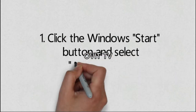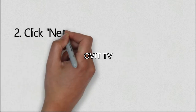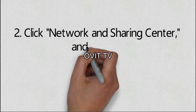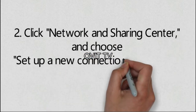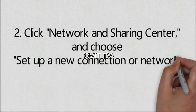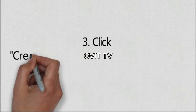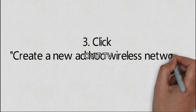Step 1: Click the Windows Start button and select Control Panel. Step 2: Click Network and Sharing Center, and choose Set up a new connection or network. Step 3: Click Create a new ad-hoc wireless network.